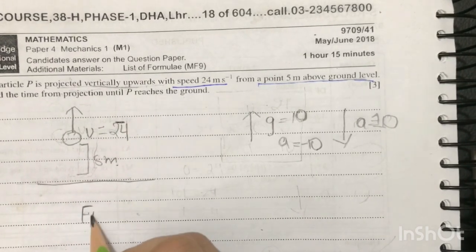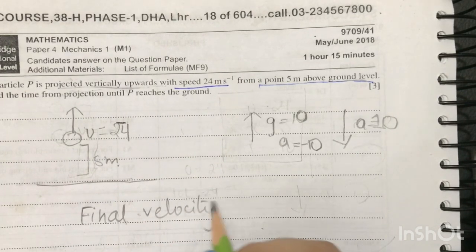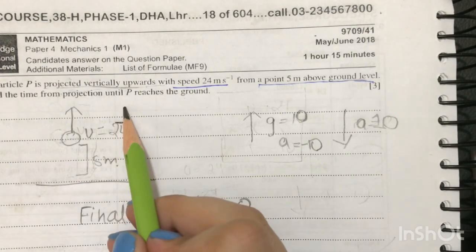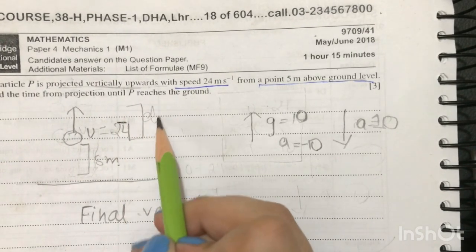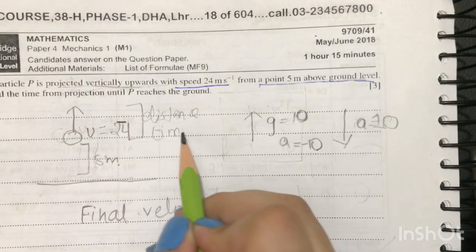Now first, another point to notice is that a particle reaches its maximum height when its final velocity is equal to zero. So now let's find the distance the particle travels and also the time it takes.